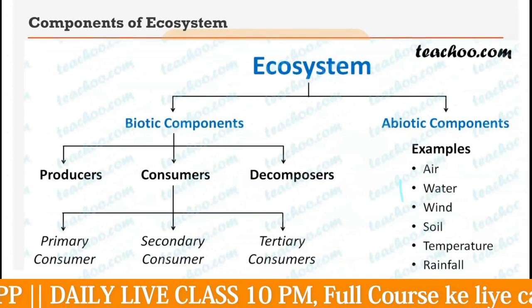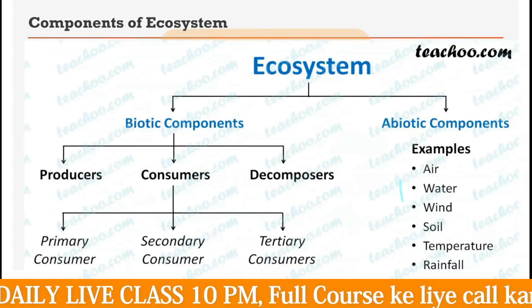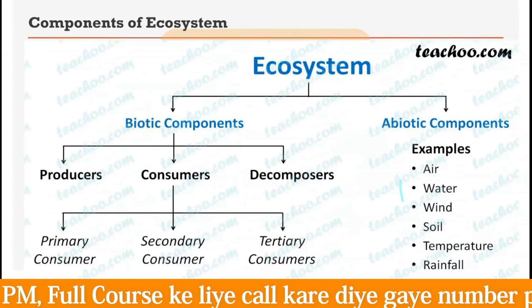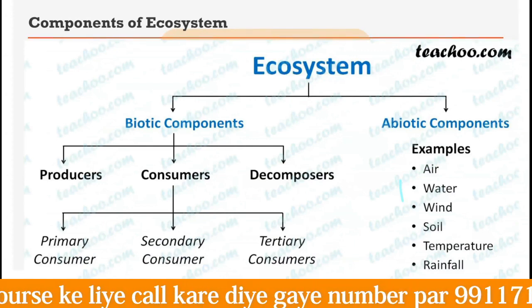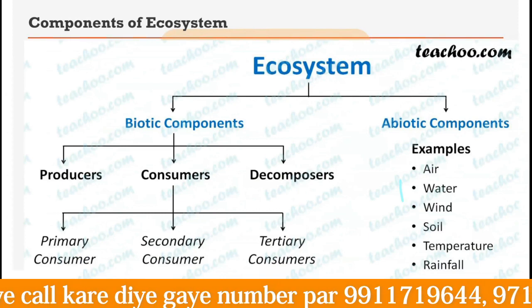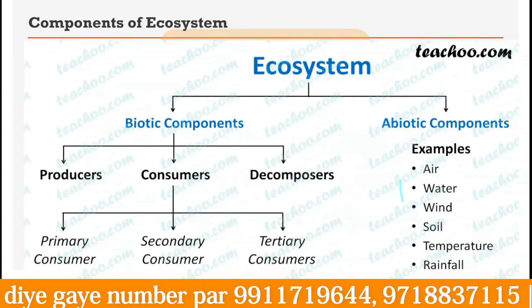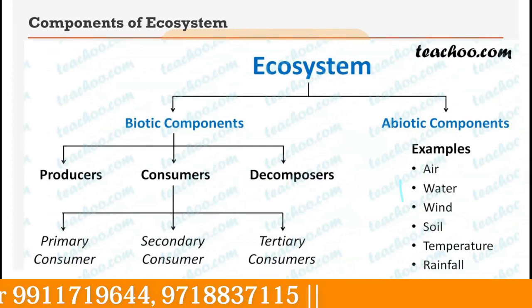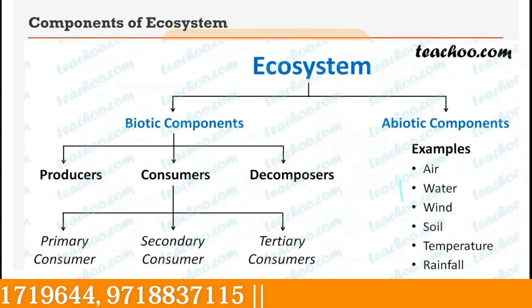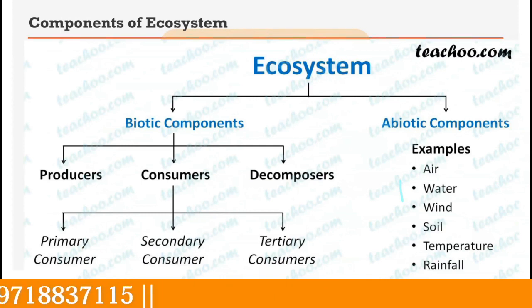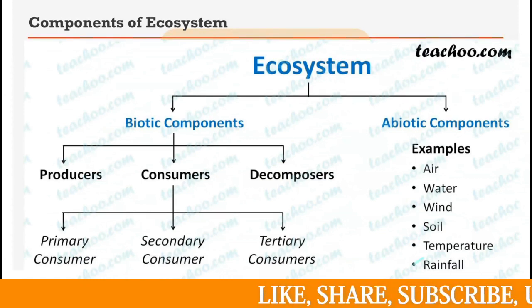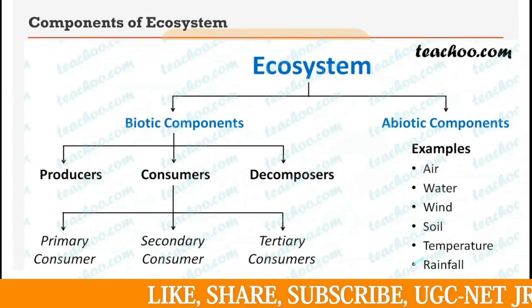Now we discuss the components of the ecosystem. As discussed, we study the interaction of two different components: the biotic component and the abiotic component. In abiotic, all the non-living things come — for example, air, water, wind, soil, temperature, and rainfall. These are all the different abiotic components.